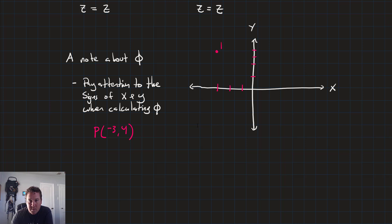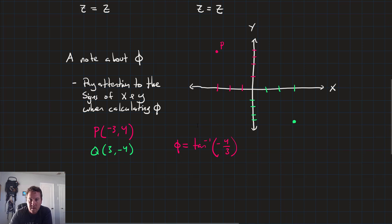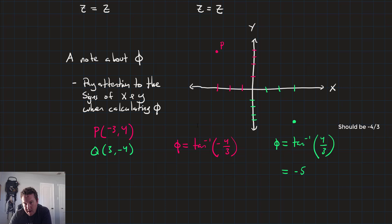That's point P, and we also have point Q at (3, -4). In both cases you'll compute theta = arctan(-4/3), and in both cases you get -53.13 degrees.